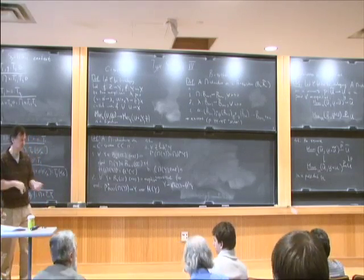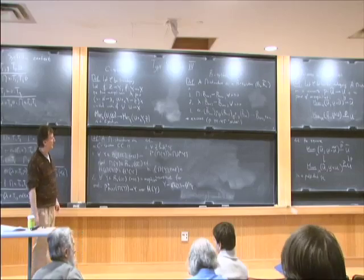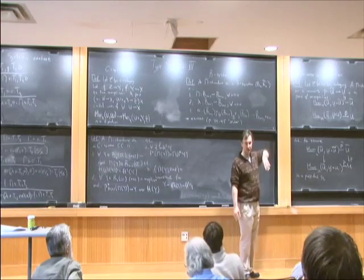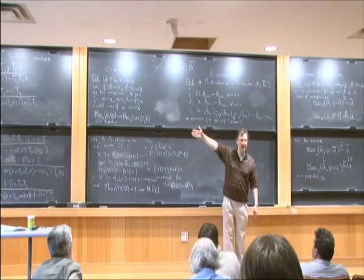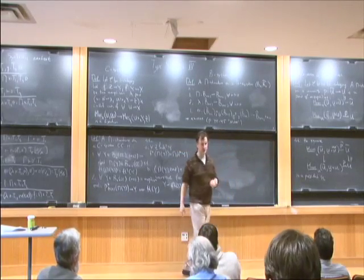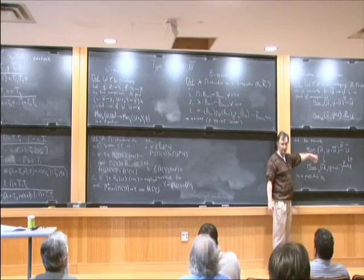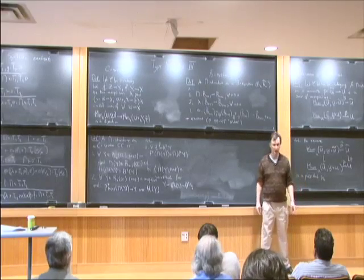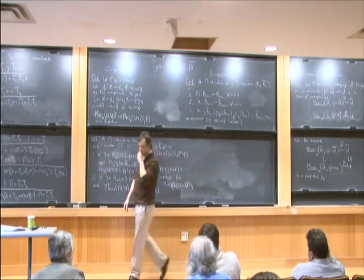A student asks what will be covered next week. The speaker answers: one thing would be to explain in this language the notion of predicative and impredicative universes — what it means to call a universe predicative or impredicative as part of a type system, and what it corresponds to in this language. Also dependent sums — all the standard things have similar expressions. Probably dependent sums, universes, and identity types will be the main topics of the next lecture.